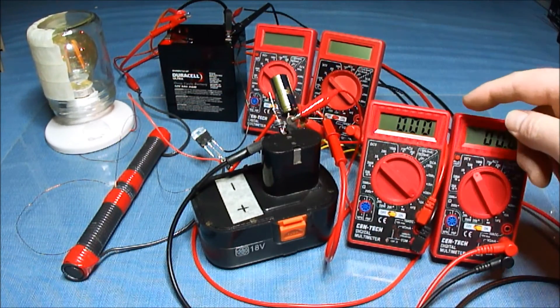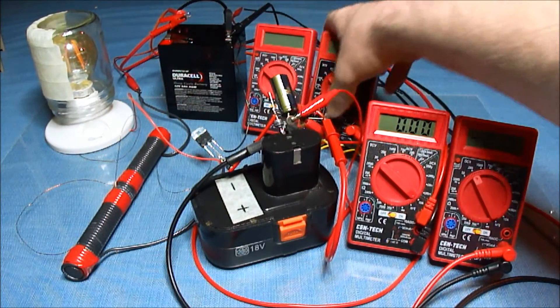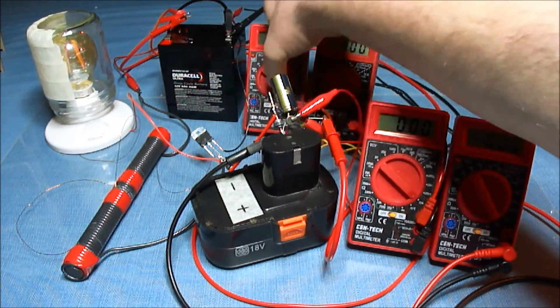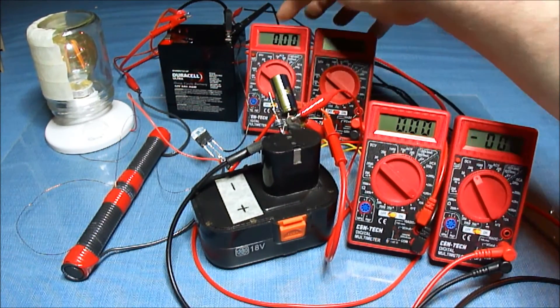These are the meters for the charge battery. I got the amps here, and the volts. And this is the source battery. You got amps and volts.